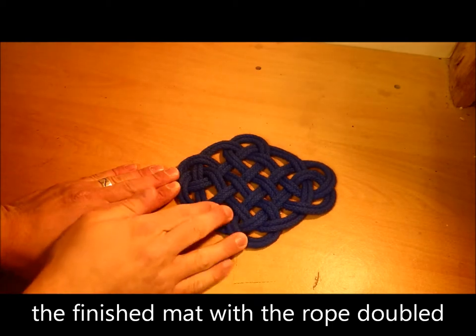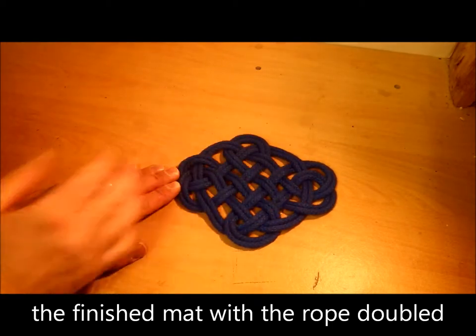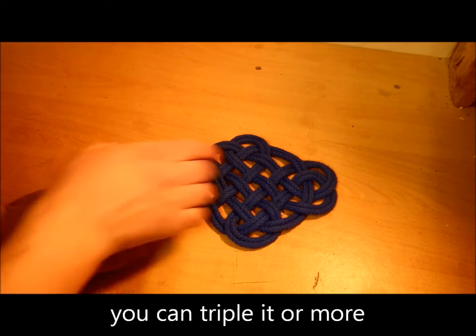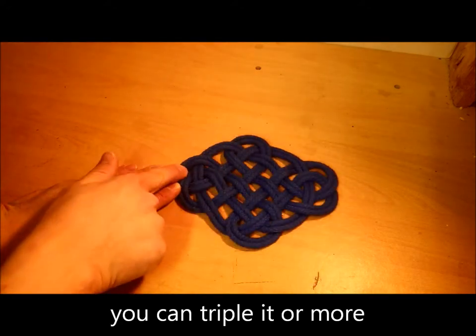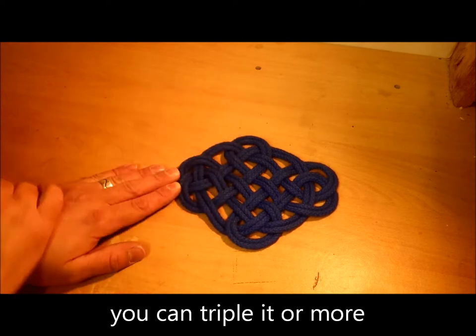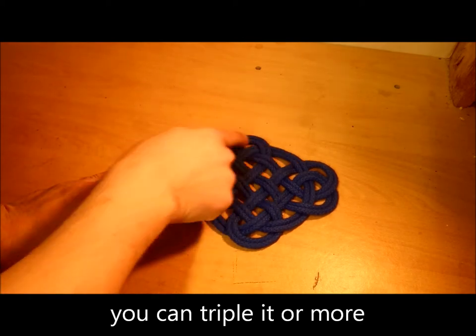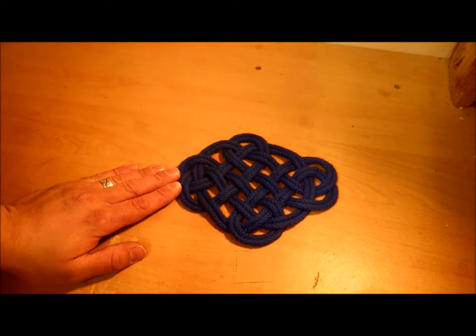Okay, so there's the finished mat. Like I say, I didn't have it doubled, but you can triple it however many times you like. So you've got the two loops on each side and then the loop at the bottom there. You've got this crisscross pattern in the middle as well.